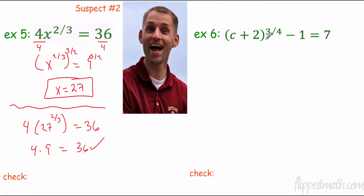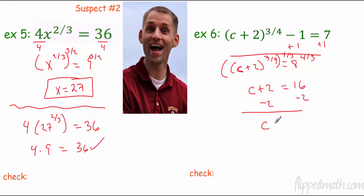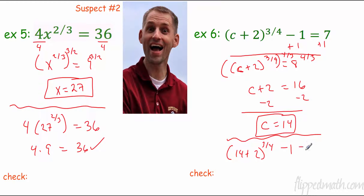The next equation has grouping with an exponent and a minus 1. Add 1 first, so c plus 2 to the three-fourths equals 8. The opposite of three-fourths power is four-thirds power. The cube root of 8 is 2, and 2 to the 4th is 16, so c plus 2 equals 16, giving c equals 14. Checking: 16 to the three-fourths — the 4th root of 16 is 2, 2 to the 3rd is 8, and 8 minus 1 is 7. It checks out.